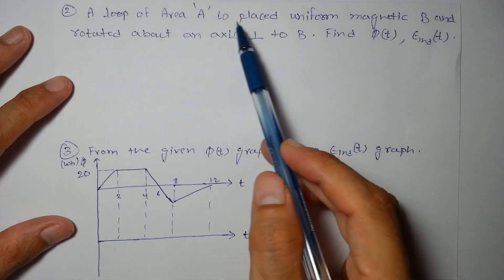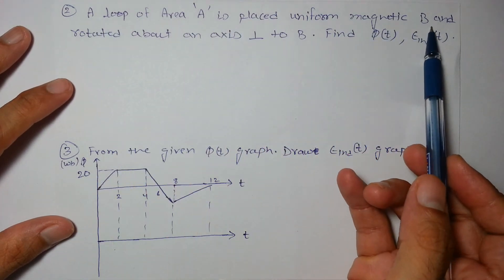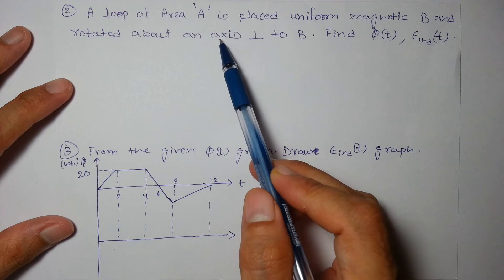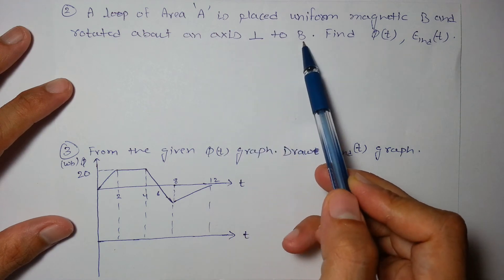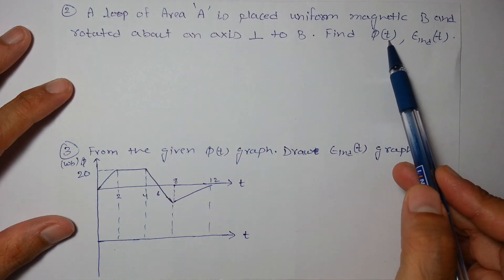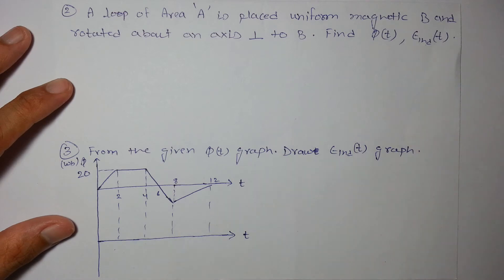Next question: a loop of area A is placed in a uniform magnetic field and is rotated about an axis perpendicular to B. Find φ as a function of t and EMF induced as function of t.